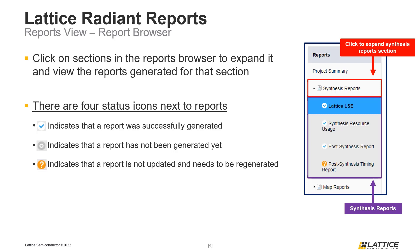Finally, the fourth status icon is an orange exclamation mark. This status icon indicates that there was an error found during the report generation. Now that we've discussed the basics of the Reports Browser, we will briefly cover some additional information regarding Radiant's generated reports.